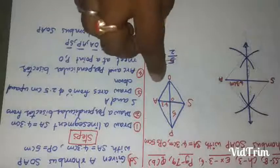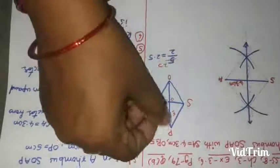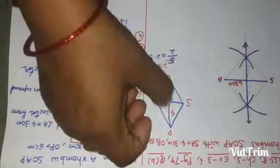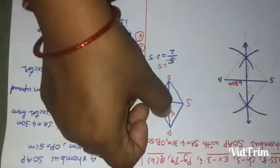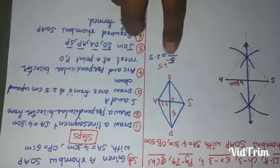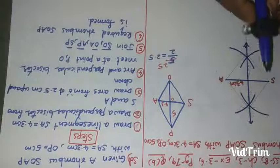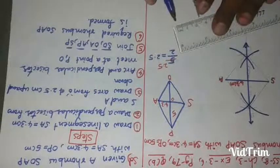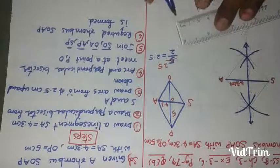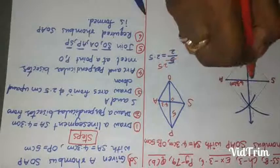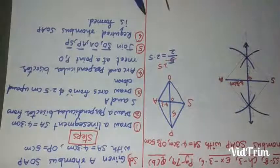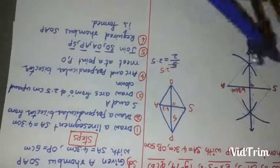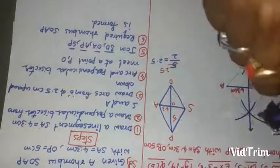Now we should see here, diagonal OP is how many centimeters? 5 centimeters. Half of 5 centimeters is 2.5. So we take measurement of 2.5 by using compass. From center O, draw an arc up and an arc down.